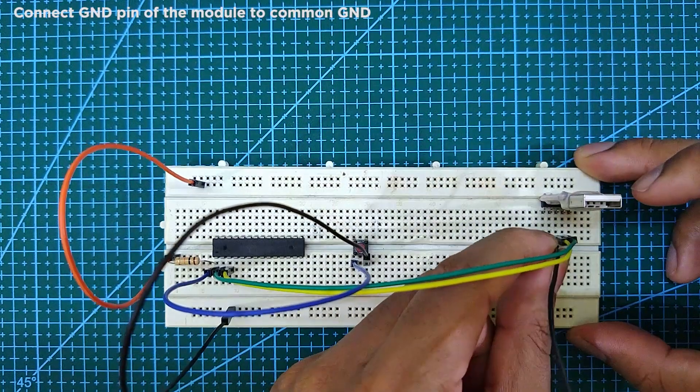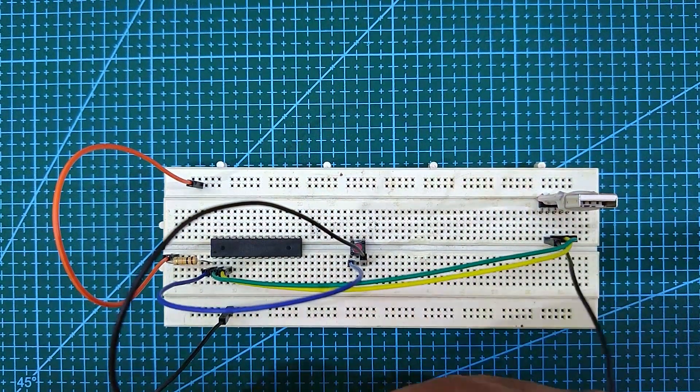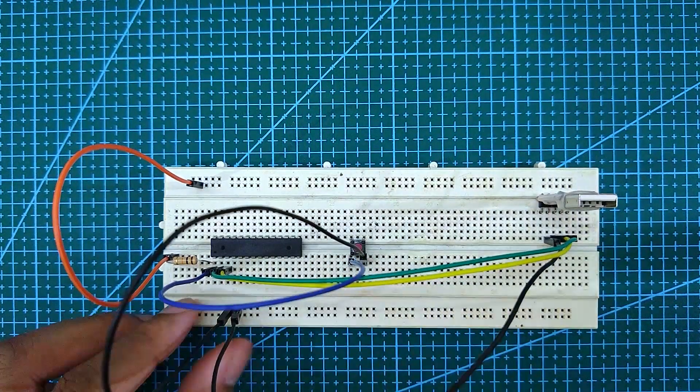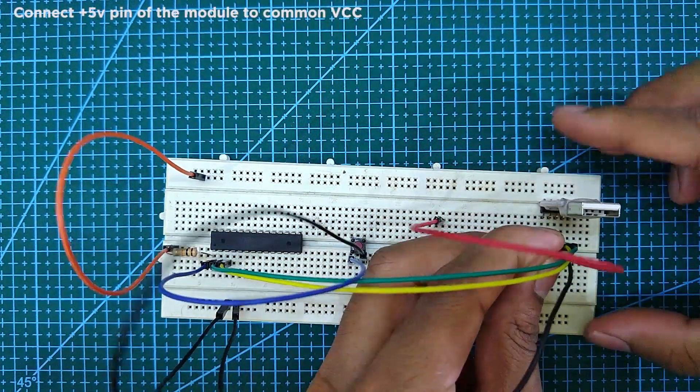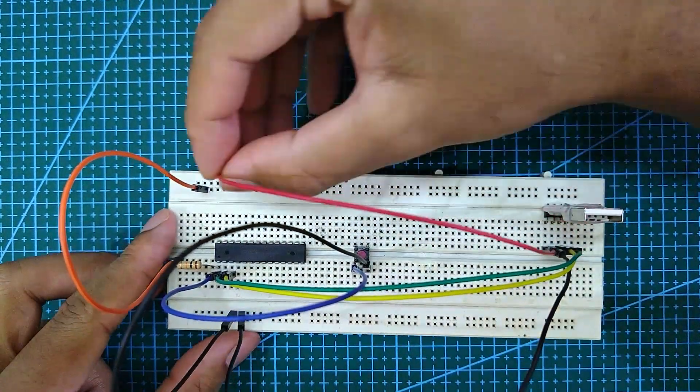Next, connect the ground pin of the USB to TTL module to common ground, and connect the 5V pin of the USB to TTL module to the common VCC.